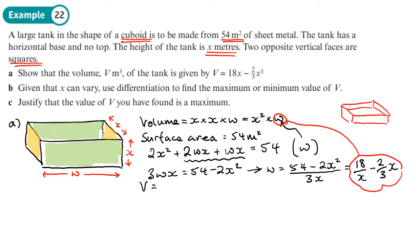That is W. So that is going to go into this equation here, so I can eliminate W. So my volume is equal to x squared times by this 18 over x minus 2/3 x. And if we work that out, that will give us 18x minus 2/3 x cubed. So we've proved it as required, by writing two equations and eliminating one of the variables. Because we've got all the information we need.